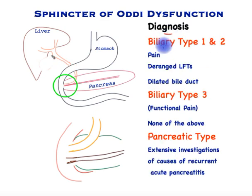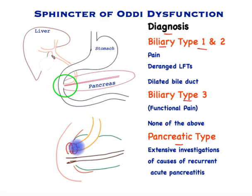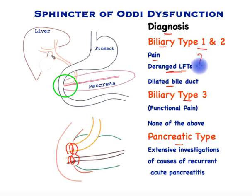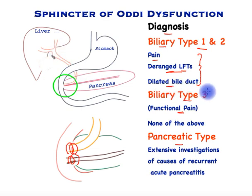So how do we diagnose sphincter of Oddi dysfunction? We differentiate between the biliary type — types 1 and 2 are very typical, and type 3 is not typical — and the pancreatic type. For the biliary type, if patients have pain with deranged liver function tests and a dilated bile tube, and these deranged liver function tests return to normality between attacks, that is a very strong indication that the patient who has had their gallbladder removed suffers with sphincter of Oddi dysfunction. However, if there is only pain but none of the other features — the bile duct is not dilated and liver function tests are normal — this is called type 3 and is not your typical sphincter of Oddi dysfunction.